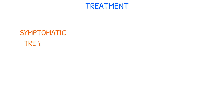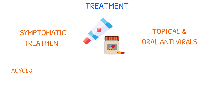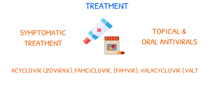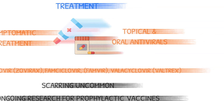Symptomatic treatment is typically recommended for herpes infections and includes the use of topical or oral antiviral agents. Oral antivirals include acyclovir (Zovirax), famciclovir (Famvir), and valacyclovir (Valtrex). Scarring is not a common outcome of herpes infections. Research is ongoing for developing prophylactic vaccines.